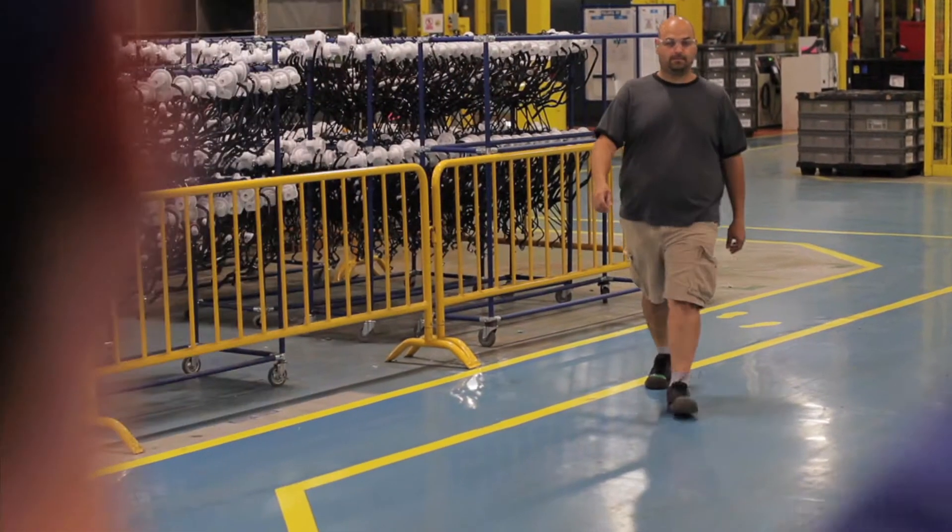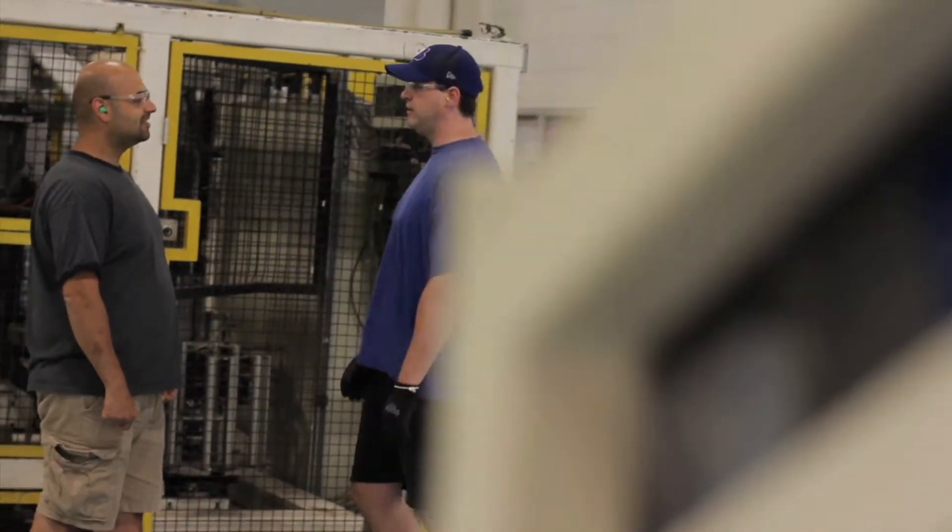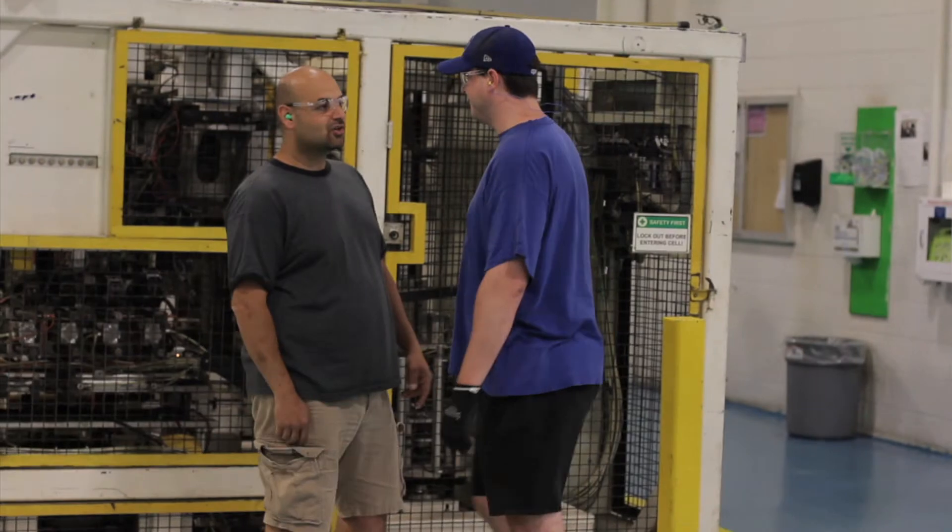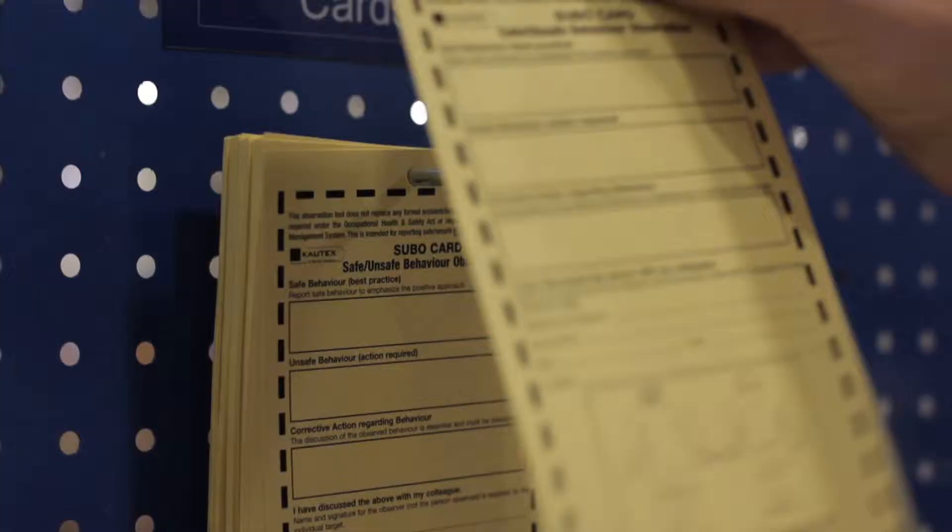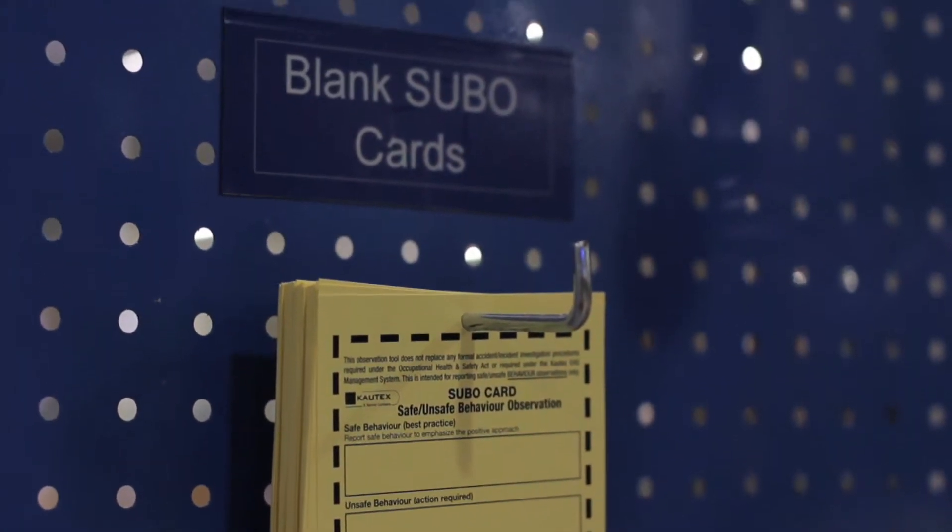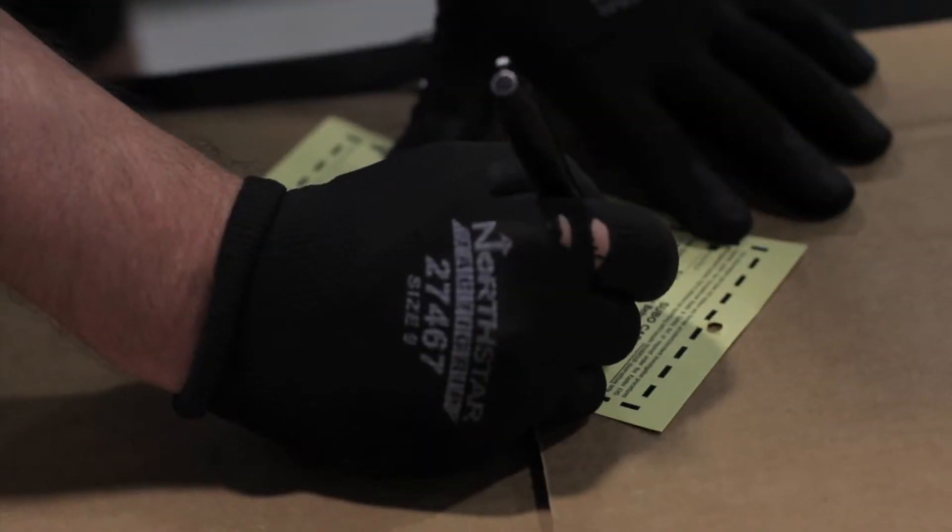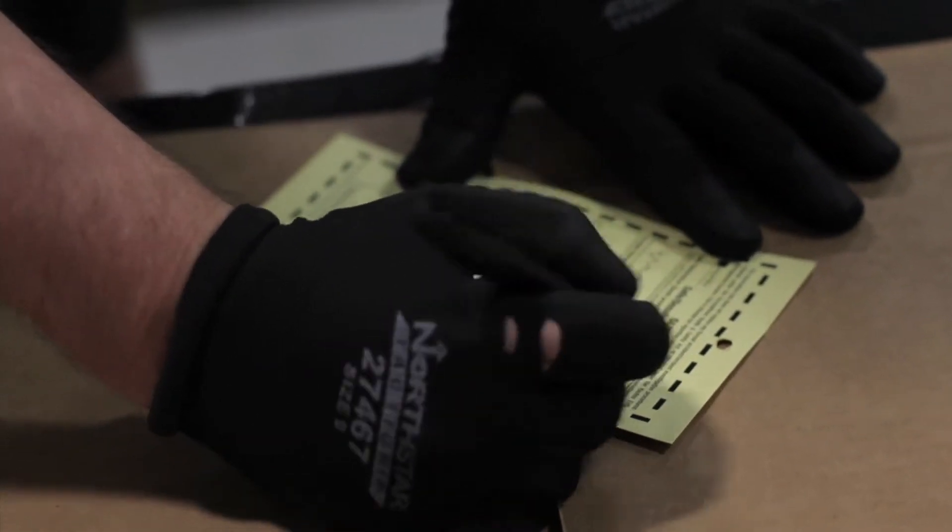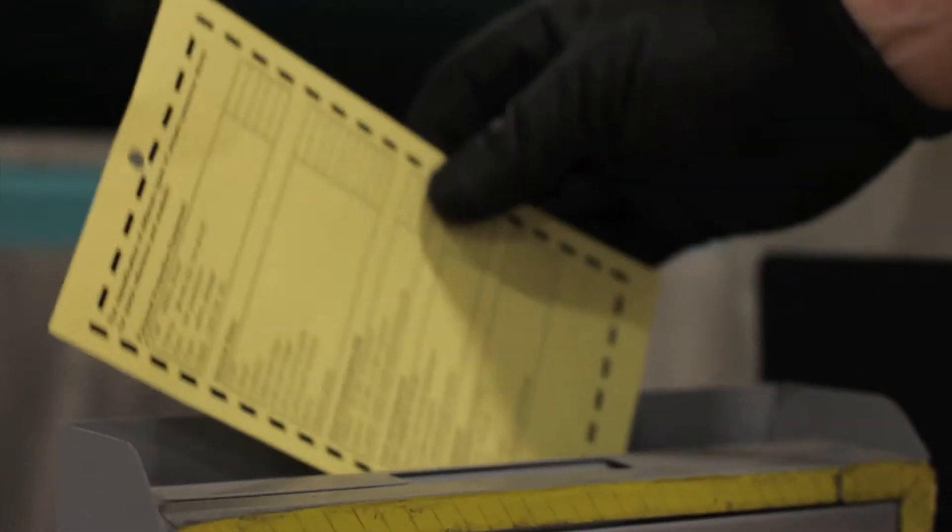Now let's take a closer look at the SUBO card system. If you see an unsafe behavior in the plant, stop the employee involved and have a discussion with him or her, pointing out the behavior and how it can be avoided in the future. Then simply get a SUBO card and fill it out. Fill in the incident and where it occurred. That's it. No name is necessary. It's not meant to be punitive.